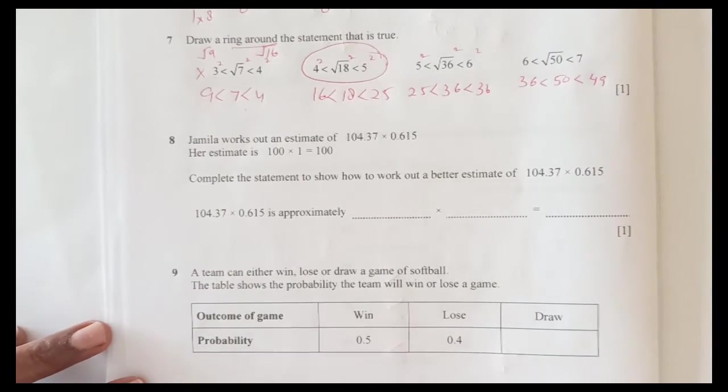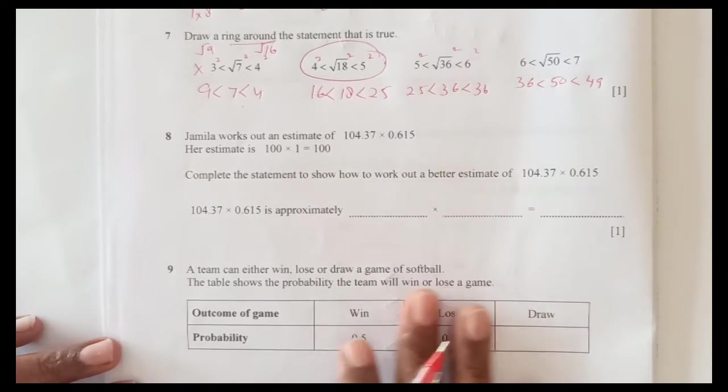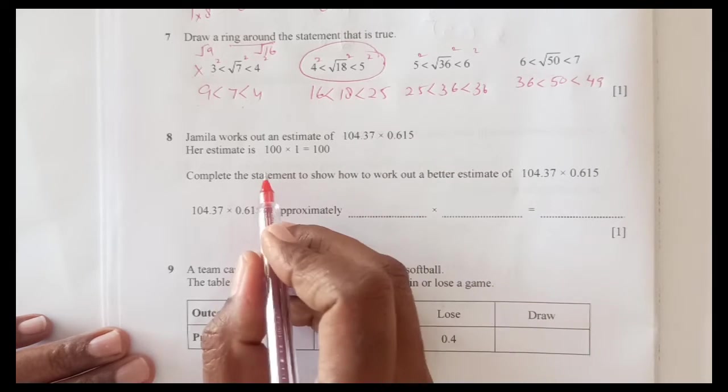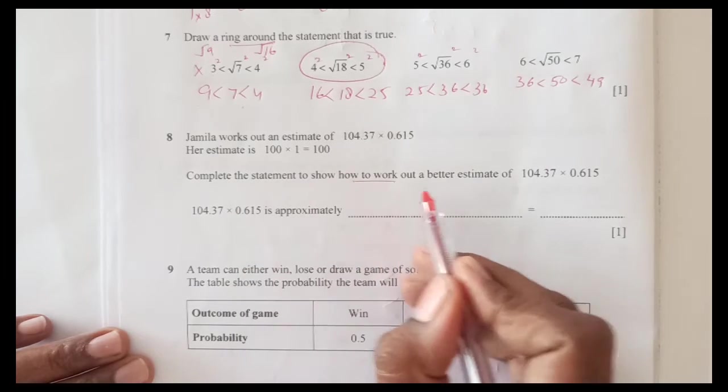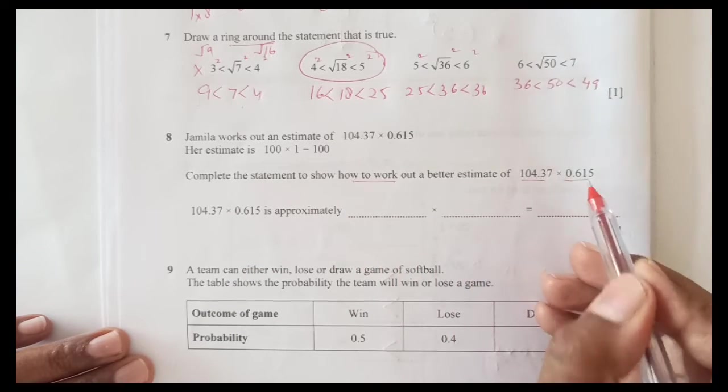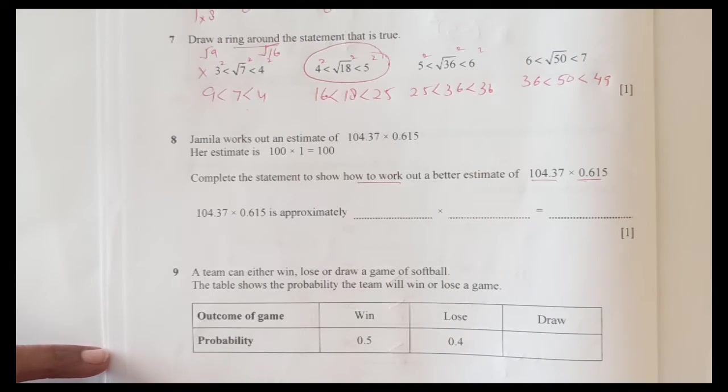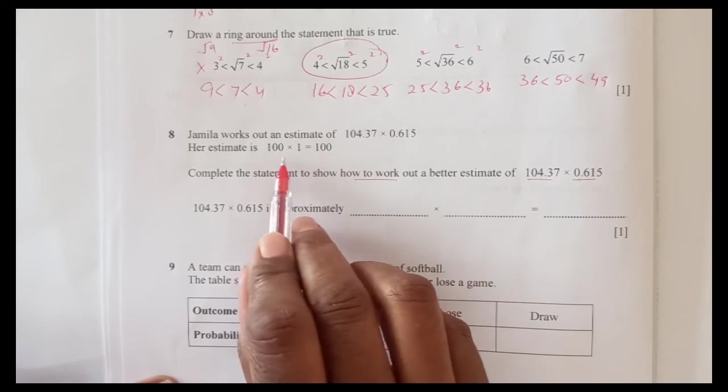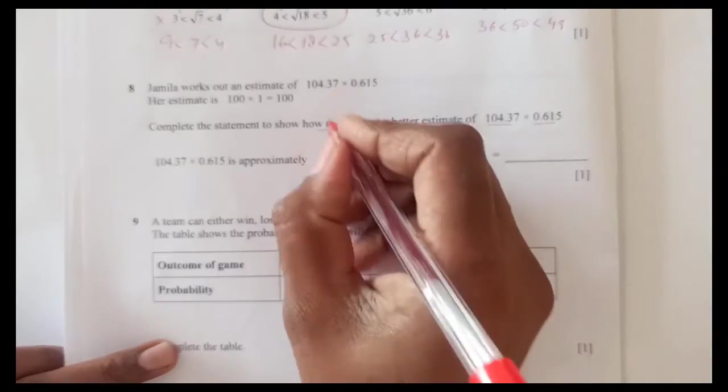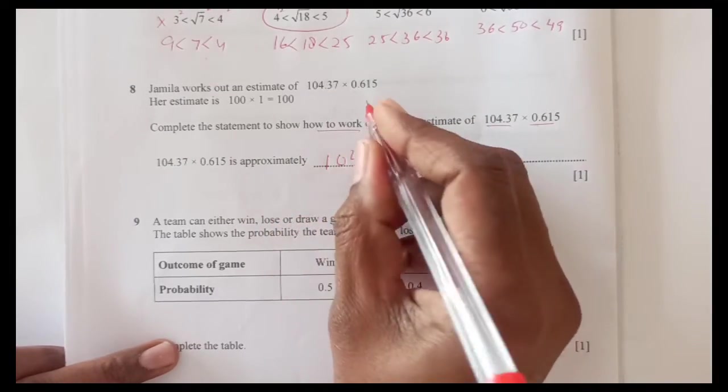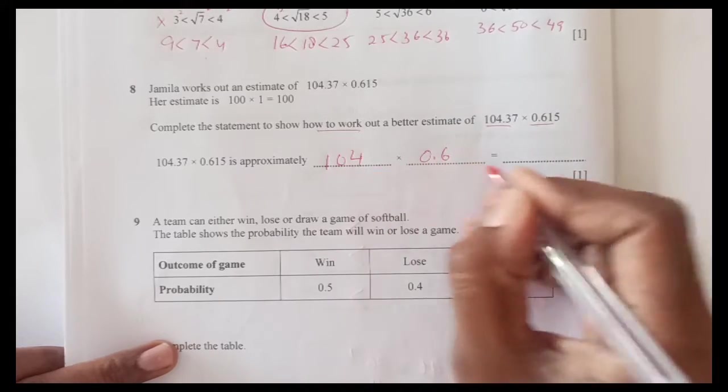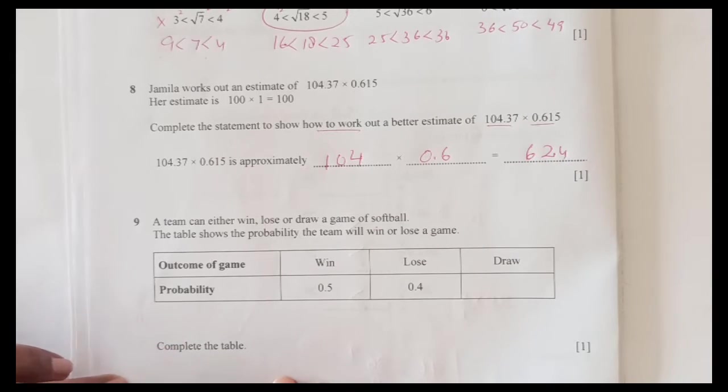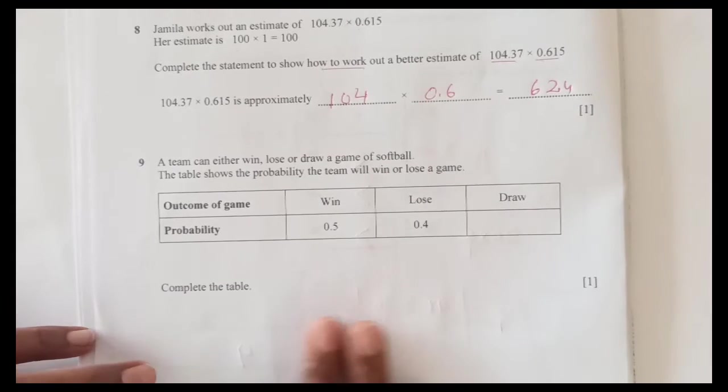Number 8: Jamila works out an estimate of 104.37 times 0.615. Complete the statement to show how to work out a better estimate of the calculation. If we take this estimation 100 and taking this 1, this is actually too far. We can just make it like 104 times 0.6. When you multiply, 6 times 4 is 24, 6 times 1 is 6, one decimal place you can have 62.4. You may have another answer you can try.